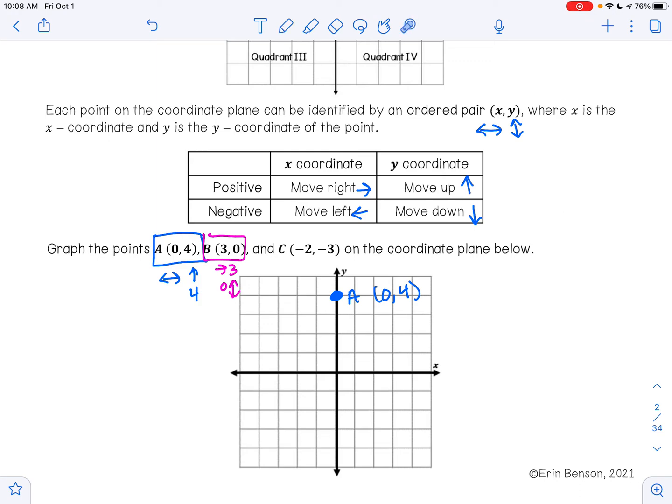So if I'm starting at my origin, I go 1, 2, 3 to the right, and then I don't go up or down. So that is my point B right there. Let me grab my pen. 1, 2, 3. And you're going to put a B there for the point (3, 0).